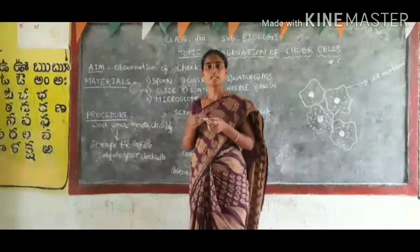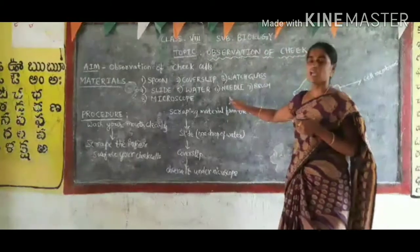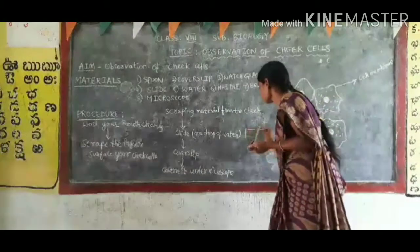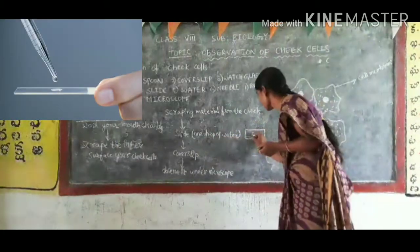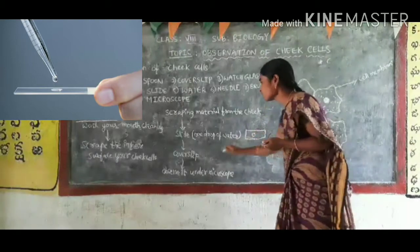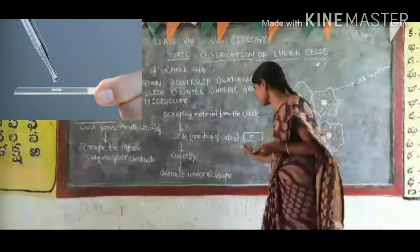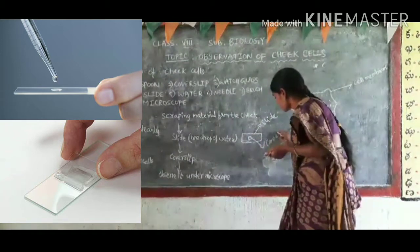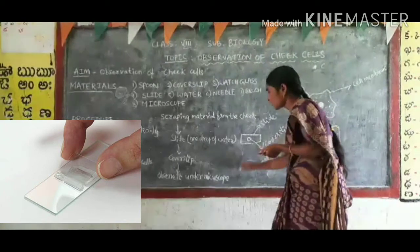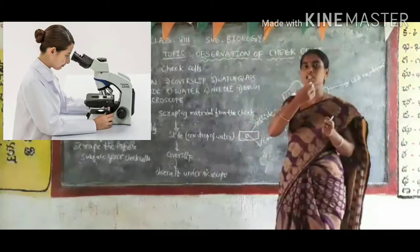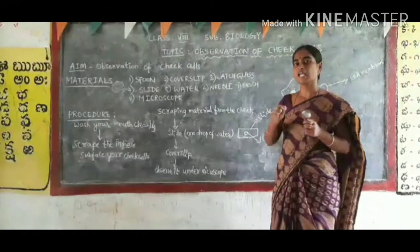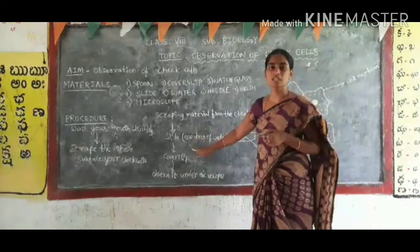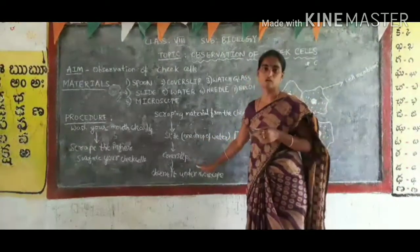Take that cheek material and put it on a slide. The slide should have a drop of water on it. Cover the material with a cover slip. Then observe it under a microscope. Spread the material collected from your cheek with the help of a spoon or toothpick, place it on a drop of water on a slide, cover it with a cover slip, and observe it under a microscope.